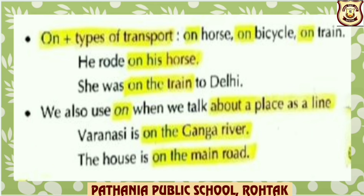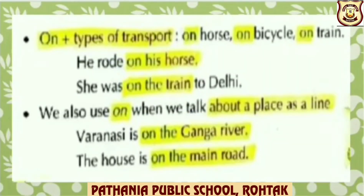For example: He rode on his horse. Here preposition 'on' and type of transport, here is horse. We also use 'on' when we talk about a place as a line. For example: Varanasi is on the Ganga river. Here preposition 'on' is used to talk about a place, that is, Ganga river as a line.